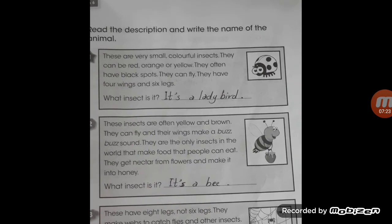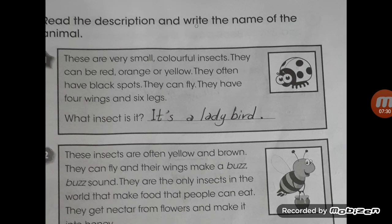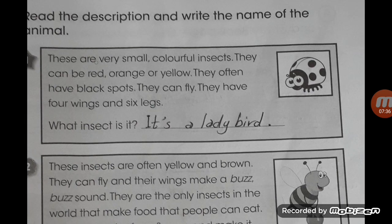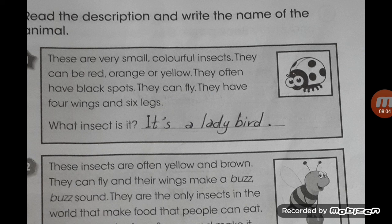Activity D in the activity book, page 31 - 'Read the descriptions and write the name of the animal.' Number one: These are very small, colorful insects. They can be red, orange, or yellow. They often have black spots. They can fly - they have four wings and six legs. What insect is it? It's a ladybird - الدعسوقة.